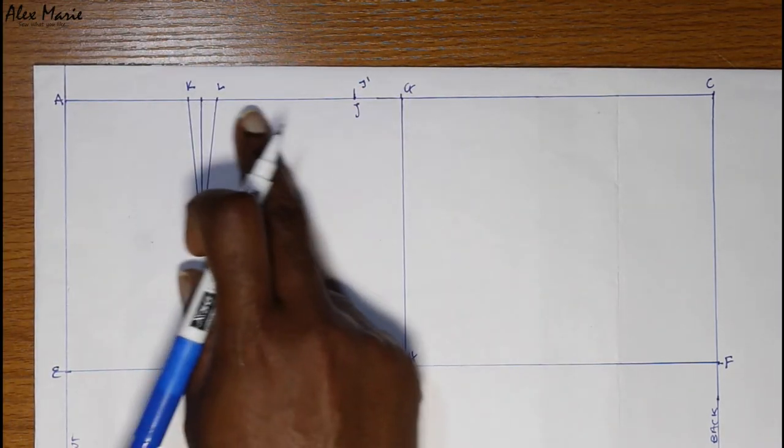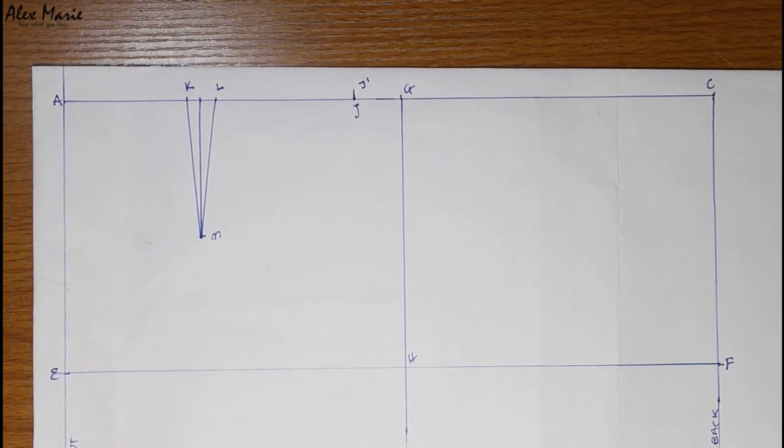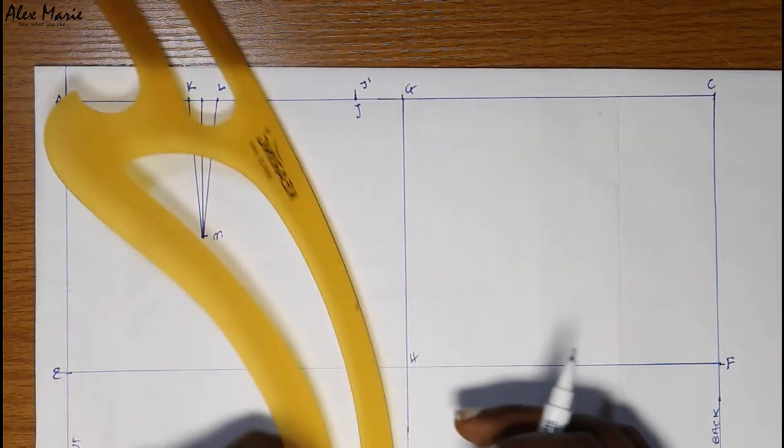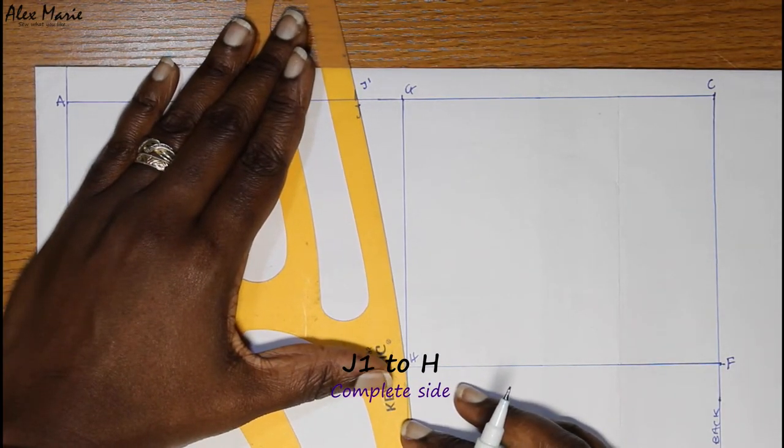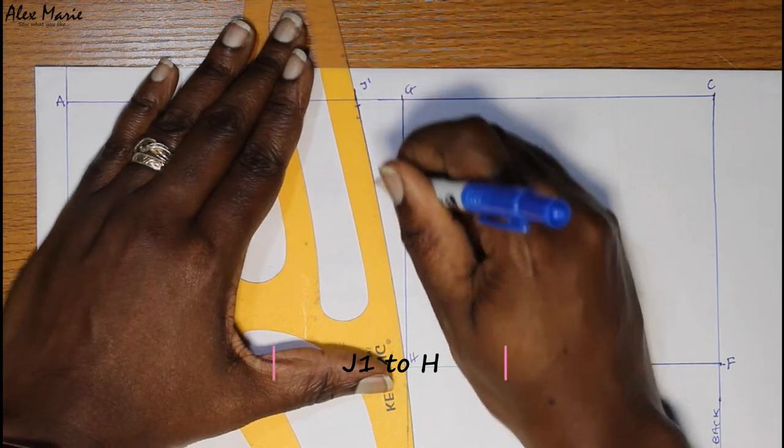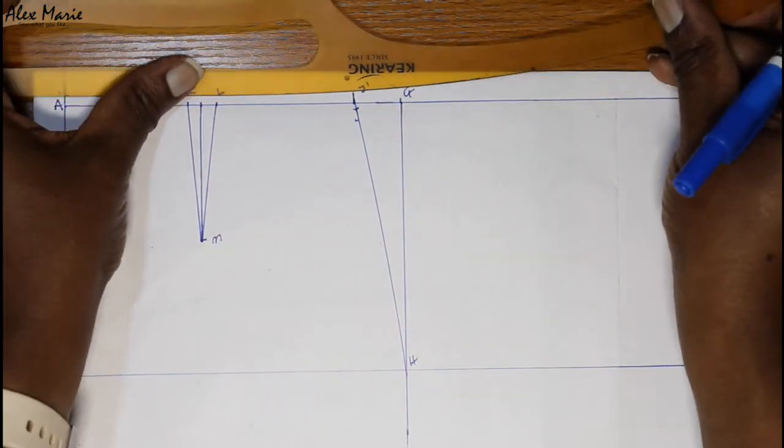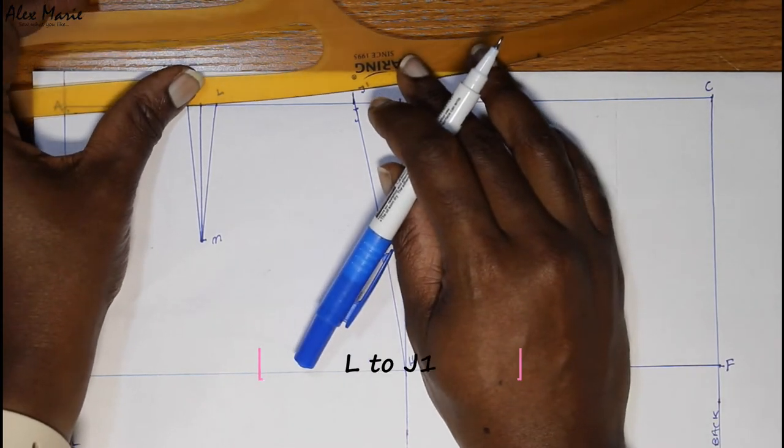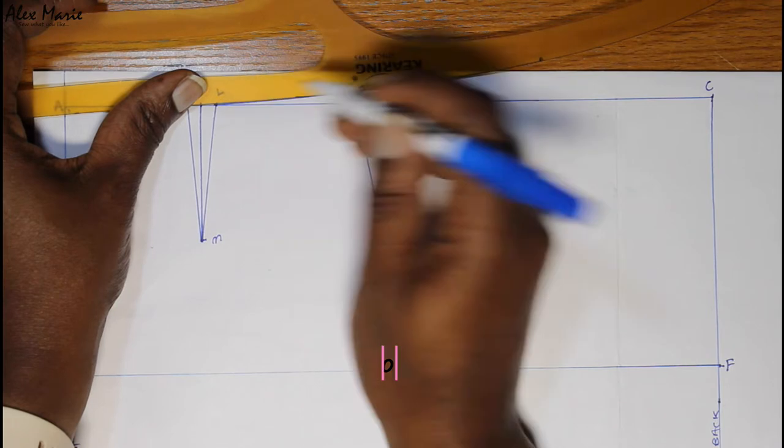Now we're just going to complete our front with curved lines. Join J1 to H. Keep this curve shallow. Do the same for L to J1. And that completes your front.